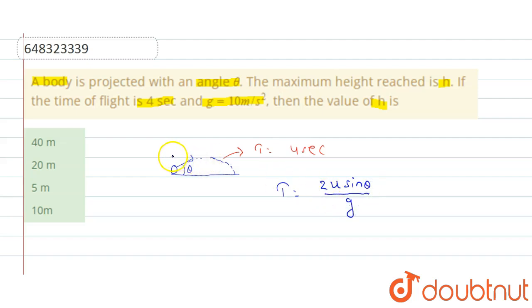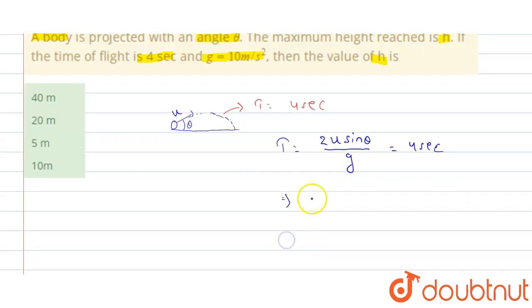Where u is the initial velocity that the body is projected with. Now this is given as 4 seconds. That implies by putting values we will get u equals 4 multiplied by g divided by 2 sin theta.